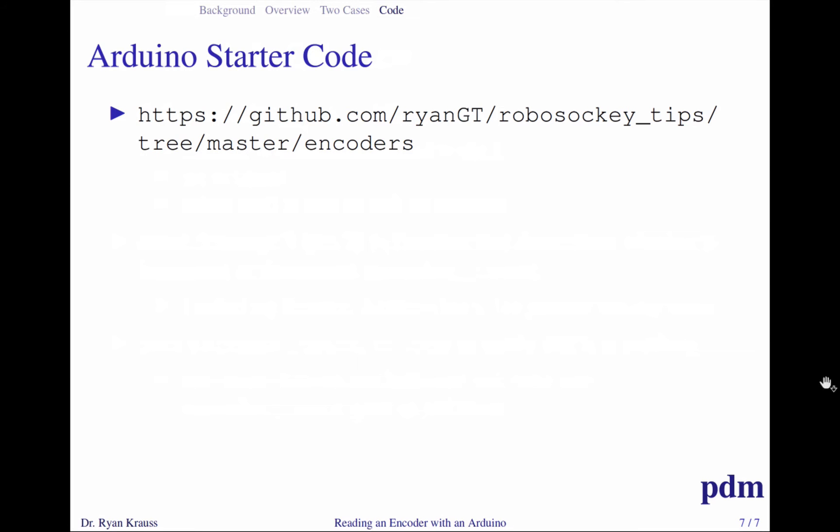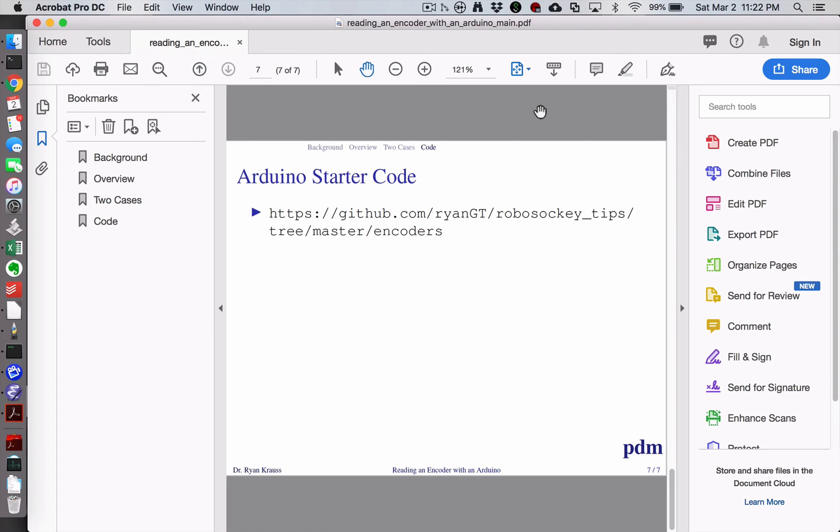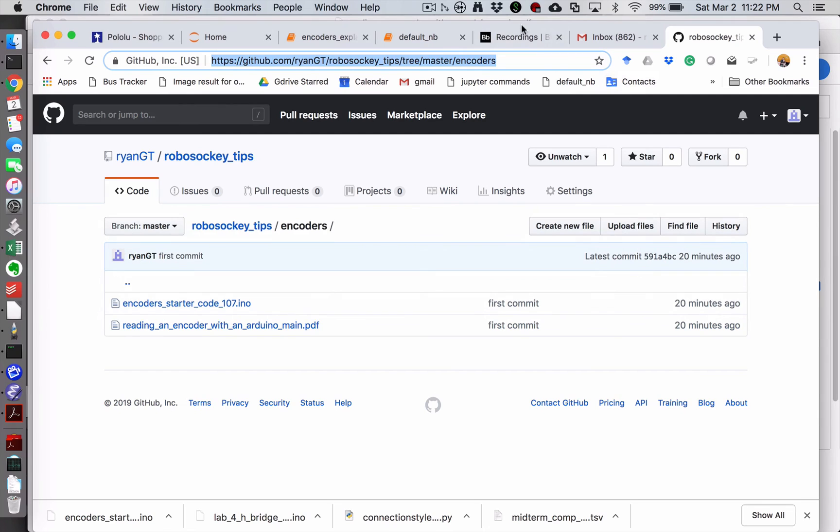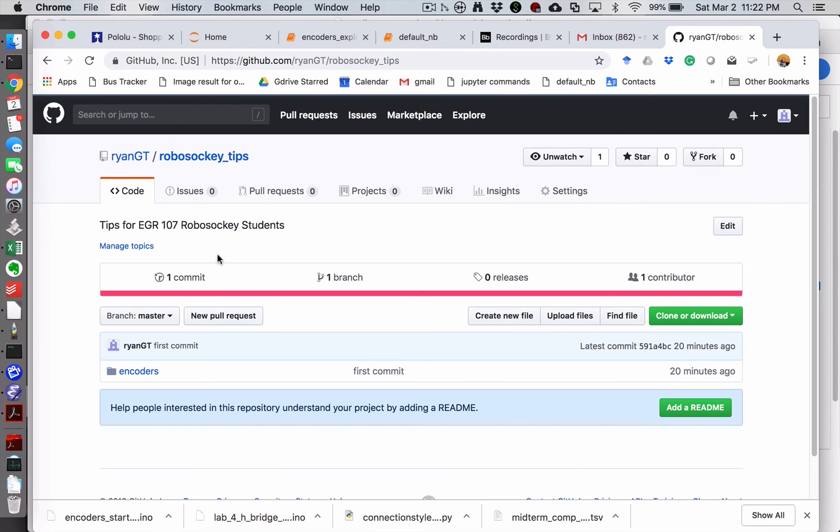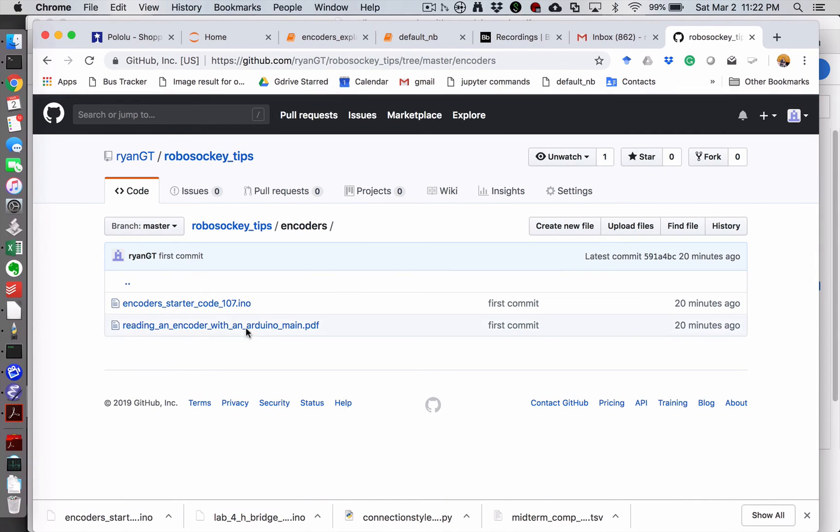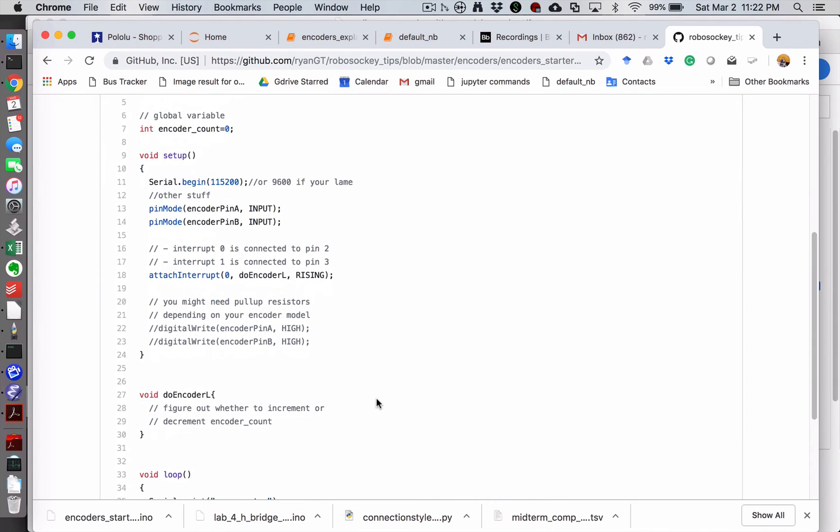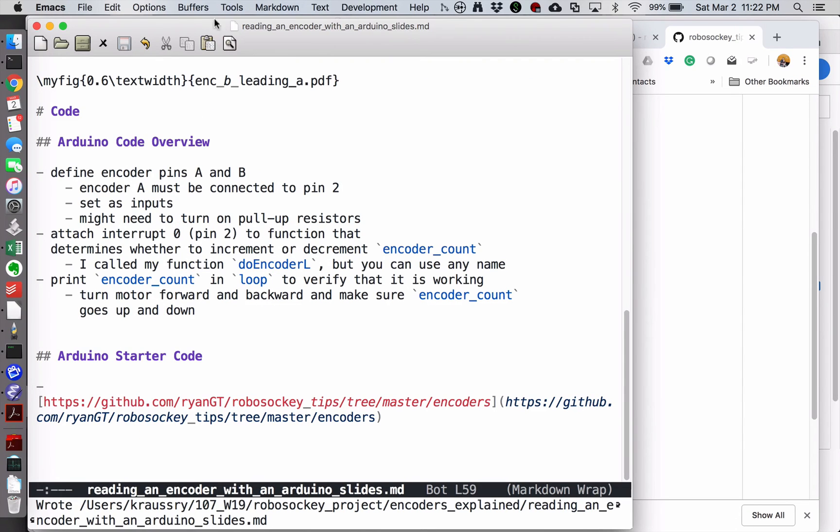I created a GitHub repository for tips regarding the RoboSaki project, and underneath there is a folder called encoders with the starter code that I want to talk about now. If you were to follow this link, you would end up here. This is my RoboSaki tips repository. If you go into the encoders folder, there will be a link to this presentation if you want to flip through the slides again, or this link would take you to the code. I'm going to talk about it using this editor just because it makes it a little bit bigger.